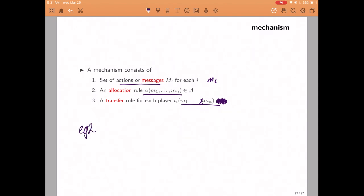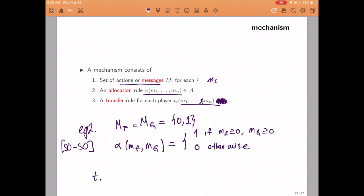How about the other mechanism that we studied last class? In the 50-50 split mechanism, the roommates were not asked to tell us exactly how much they value the machine. We only asked them to tell us whether their value was greater than 500 or not, so the set of messages could just be the set zero one, where a message of one means that they do value the machine more than 500 and a message of zero means that they do not. Our allocation rule was that we would buy the machine if and only if both roommates say yes, in which case each of the two roommates would pay 500. So that also gives us the transfer rule.